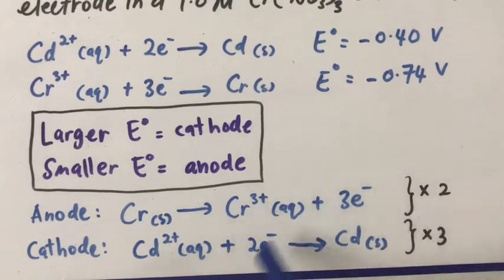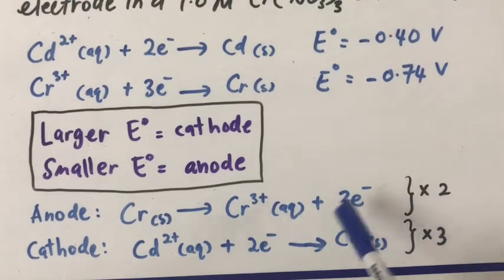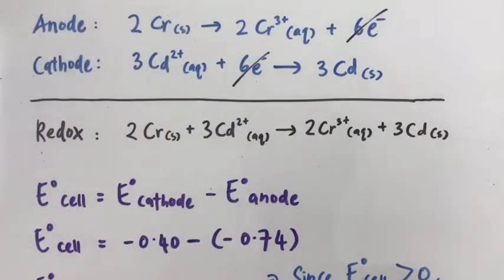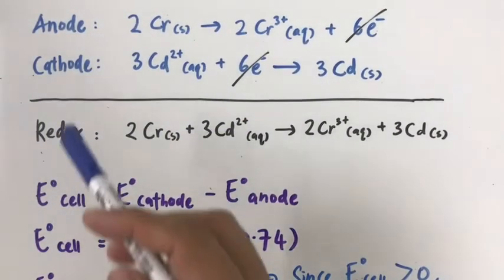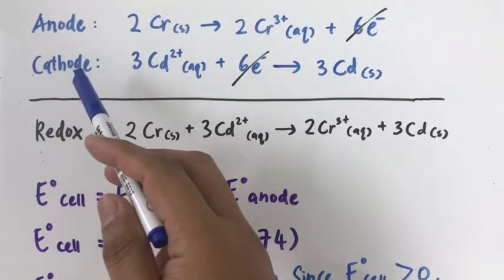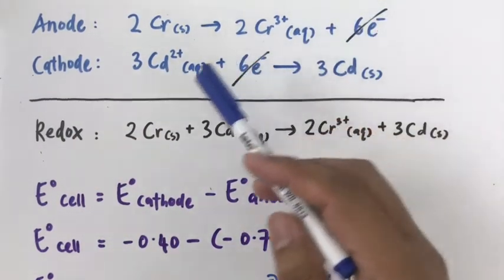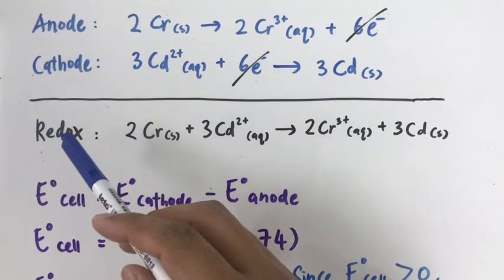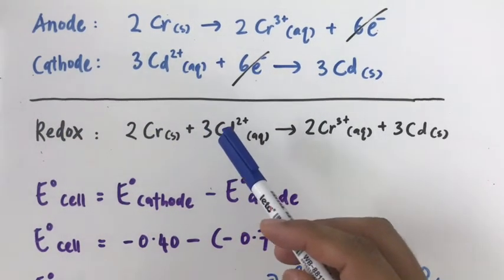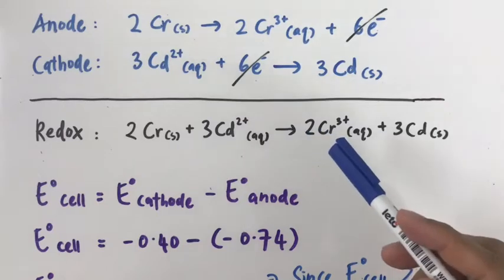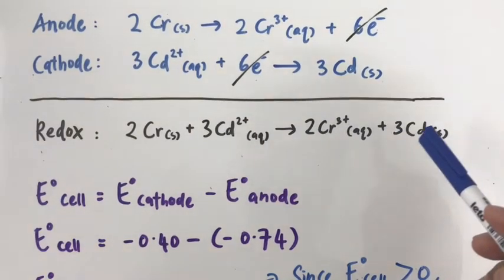Since the electrons are not the same, we have to multiply by 2 and multiply by 3 so that we can cancel out the electrons to form an overall redox reaction. We just need to balance the half-reactions for anode and cathode by canceling out the electrons on both sides. Here we have 2Cr plus 3Cd²⁺ producing 2Cr³⁺ plus 3Cd.